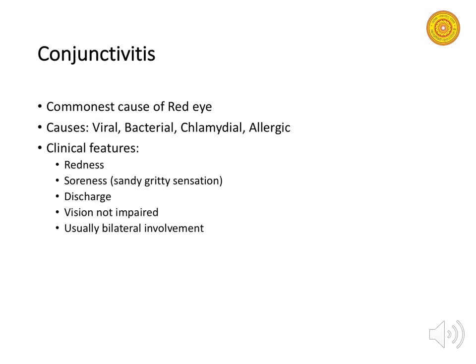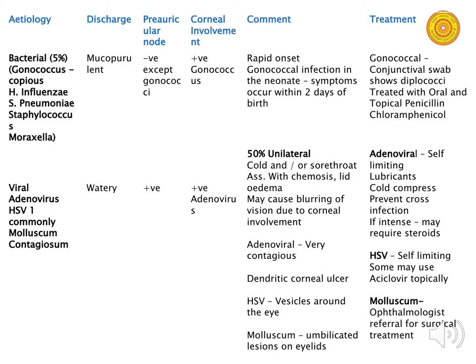The commonest cause of red eye is conjunctivitis. It can be caused by viral, bacterial, chlamydial, and allergic conditions. There is redness of the eye, usually with bilateral involvement — even if one eye is affected first, it spreads easily to the other. In allergic conjunctivitis it is almost always bilateral. Patients feel a gritty sensation as if there is sand in the eye, and there can be discharge. Vision is usually not impaired unless the cornea is involved.